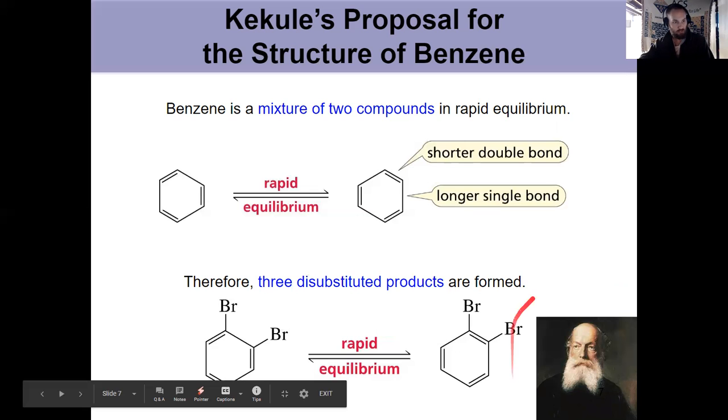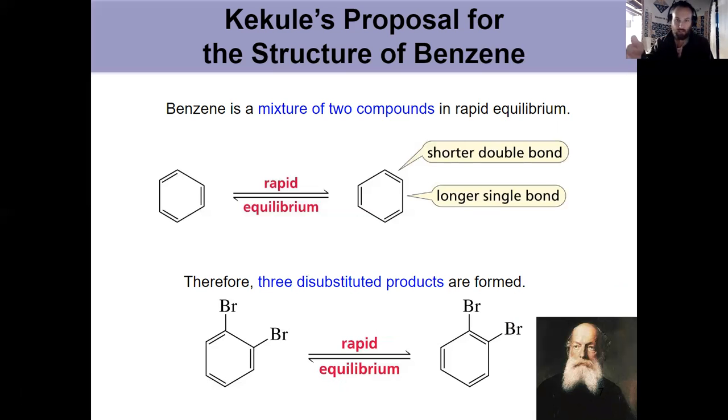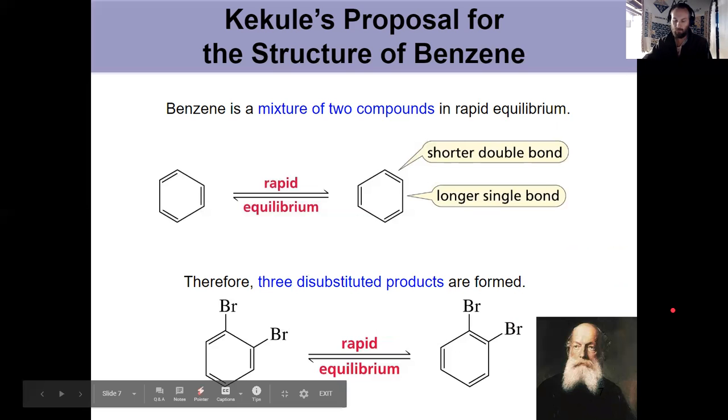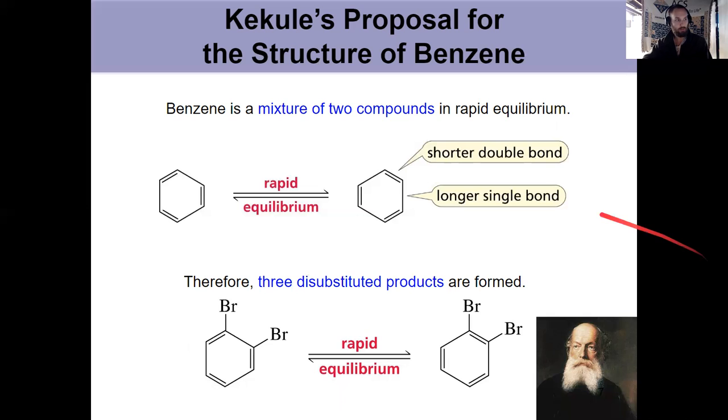And this is a picture of Kekule down here. This guy's one of the godfathers of chemistry. Students that worked underneath him won three out of the first five Nobel prizes. Van Hoff, Fisher, and Bayer, names you've heard in gen chem and organic so far, all worked under him. So he was the one that first proposed this idea, two compounds in rapid equilibrium.